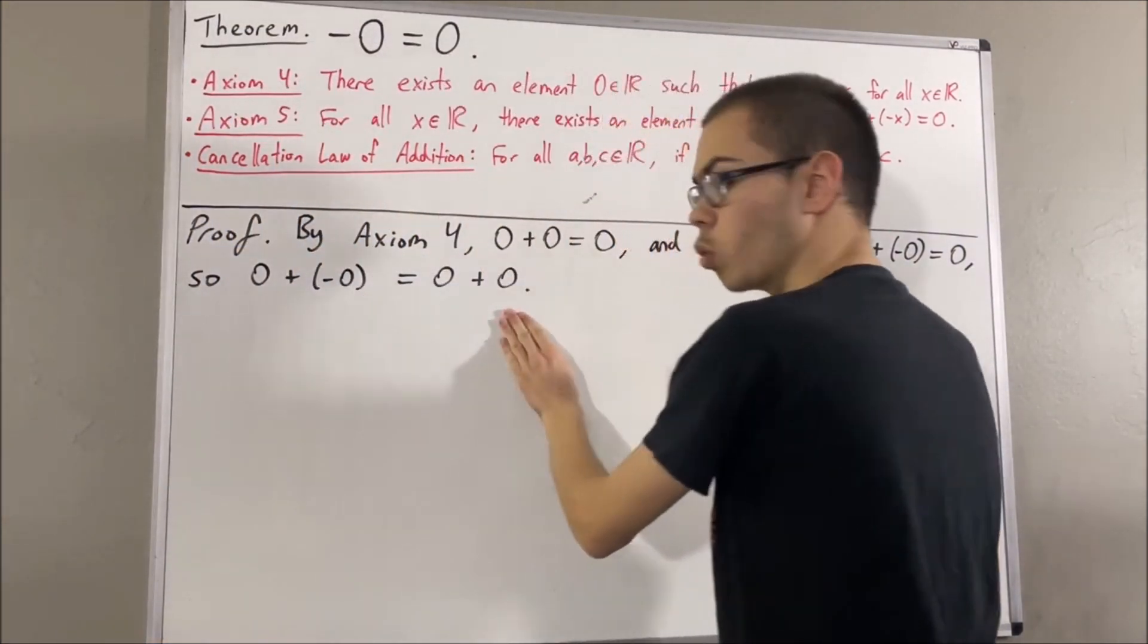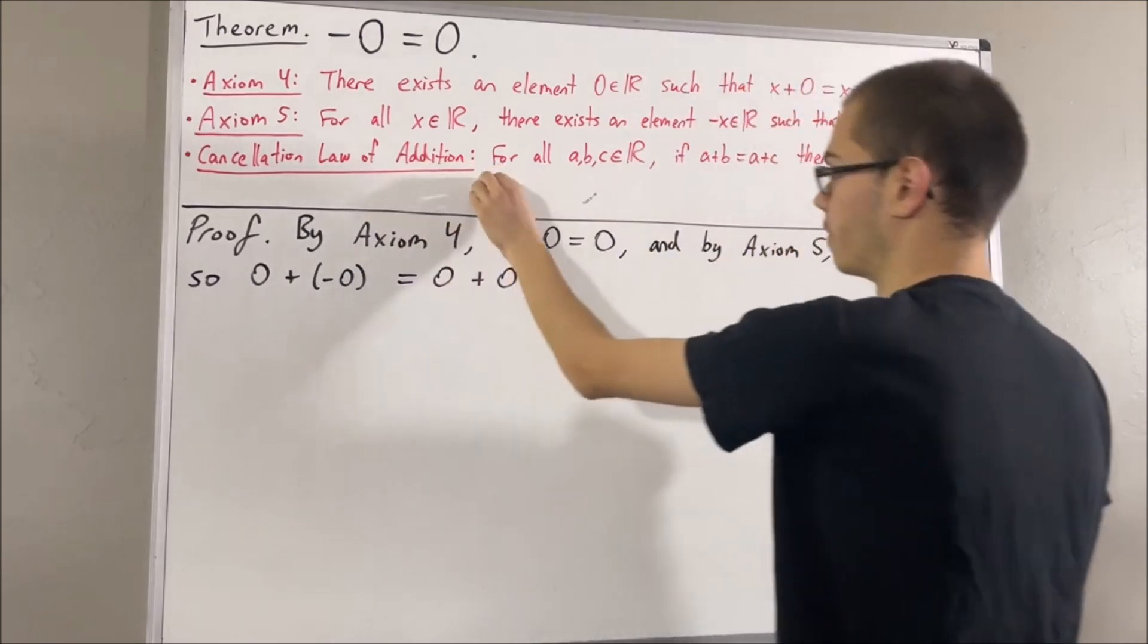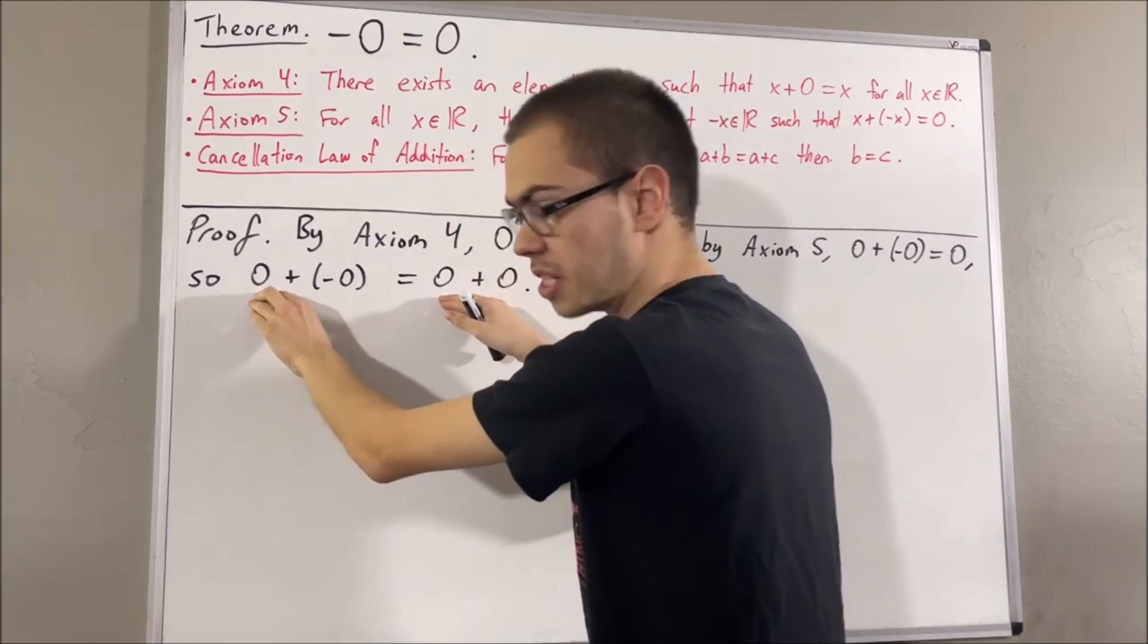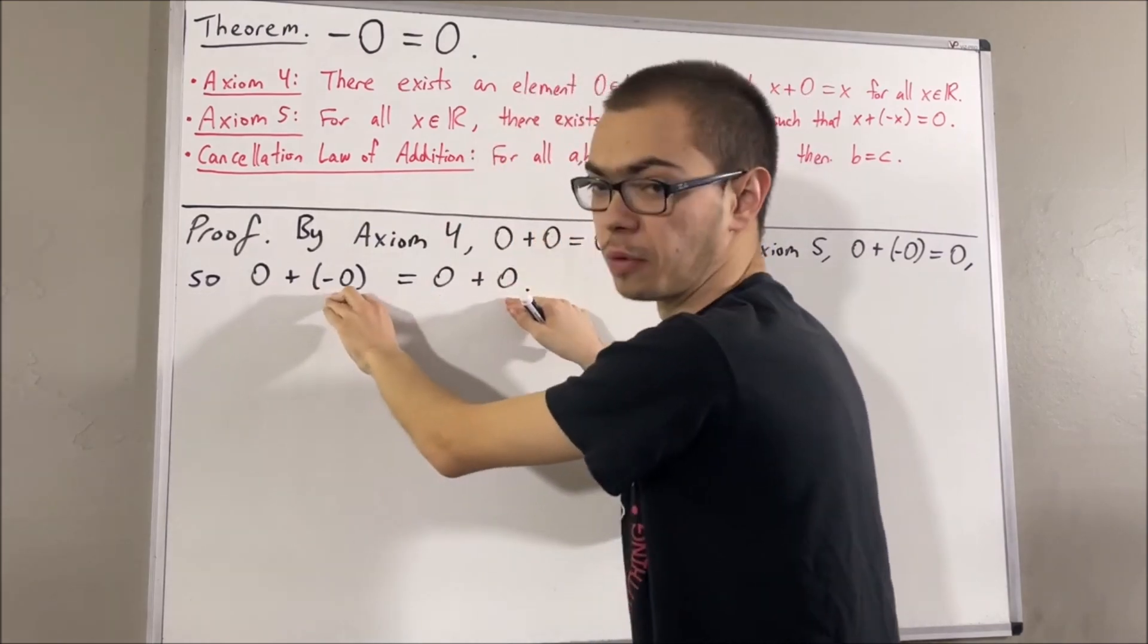And from here, we're in a position to apply the cancellation law of addition. So, applying the cancellation law of addition, we can cancel out the zeros. And so, we're left with the negative of zero is equal to zero.